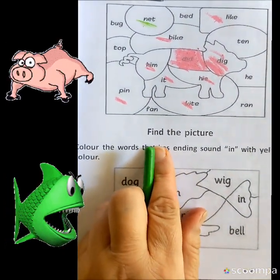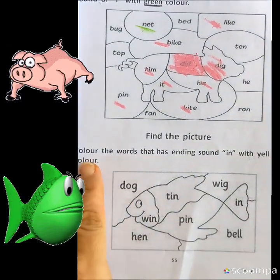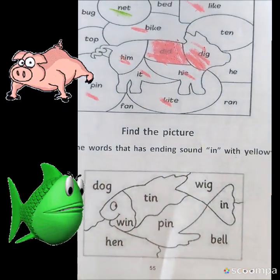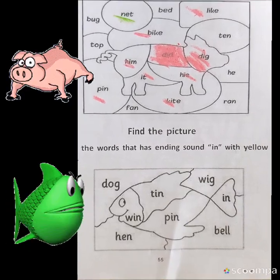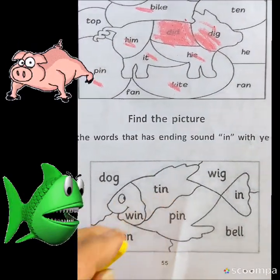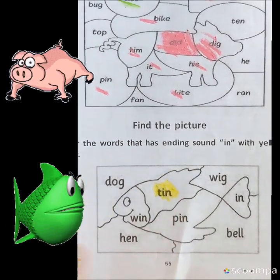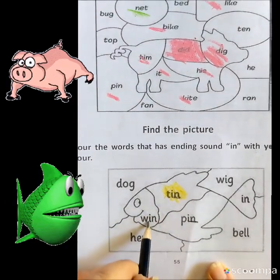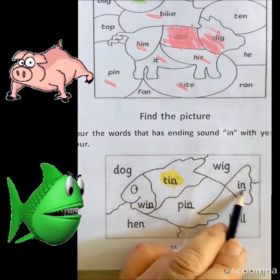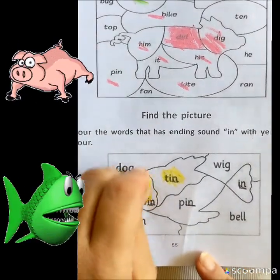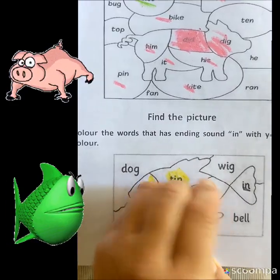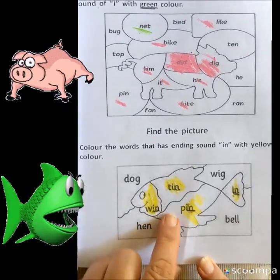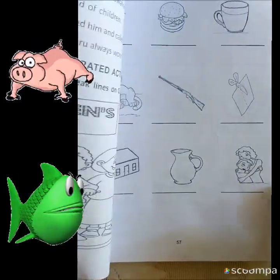Next is: find the picture - the word that has ending sound IN, color with yellow color. The ending sound is IN. In - we will color with yellow color. Last sound IN: this is IN, this is IN, this is IN. Now we have to do these as yellow color. I will not do it all, you will do it yourself. So let's see what our fish will look like. You will do this activity also. Okay?